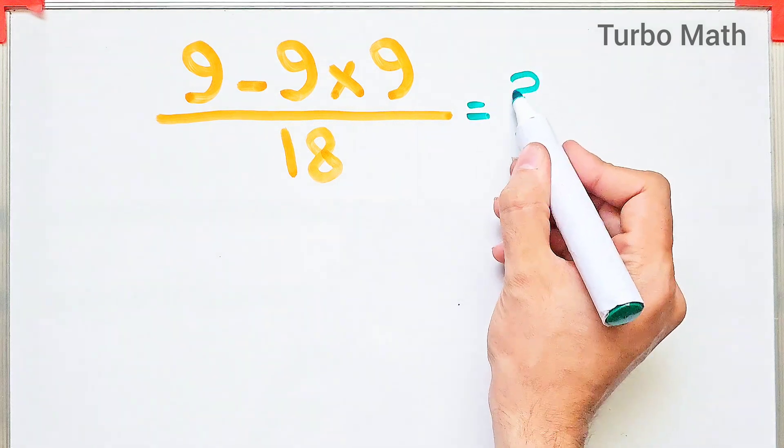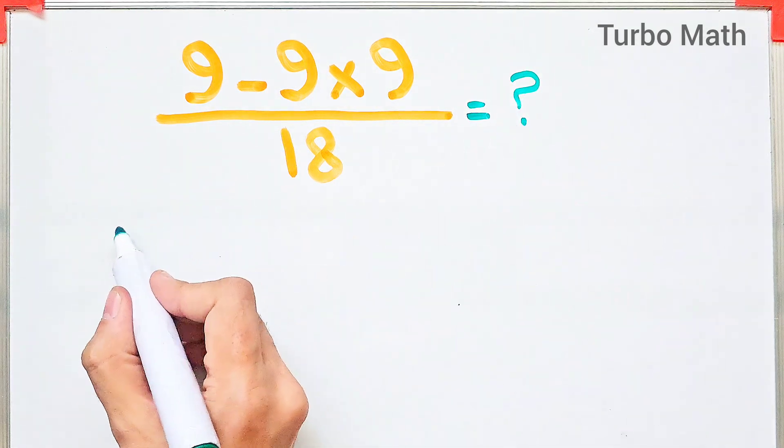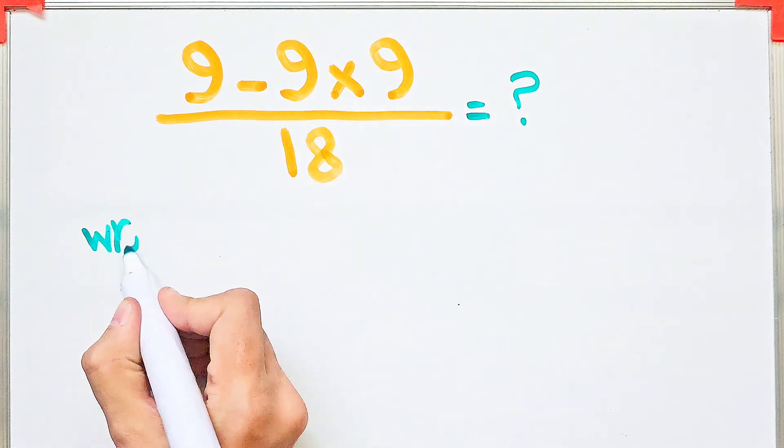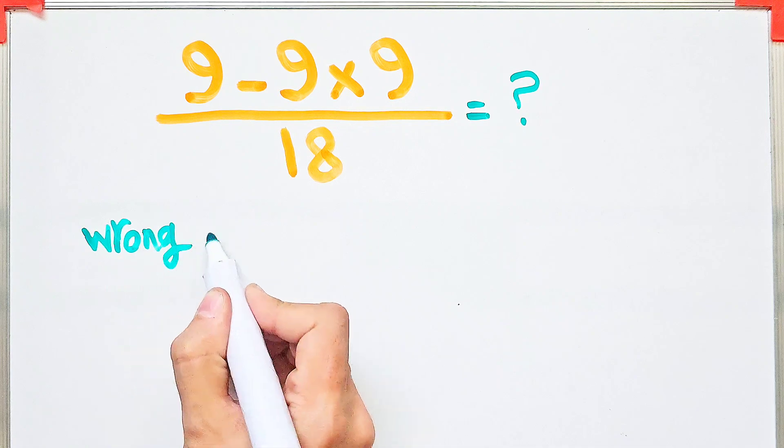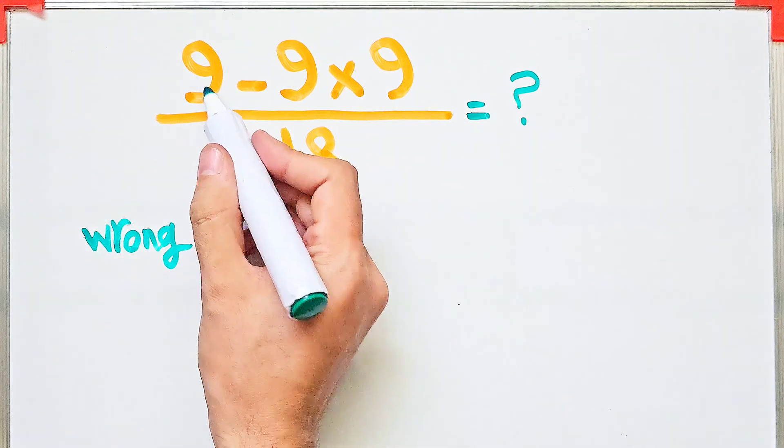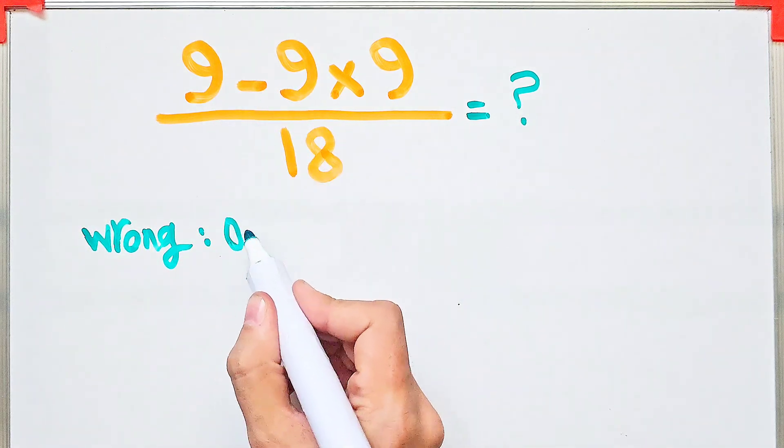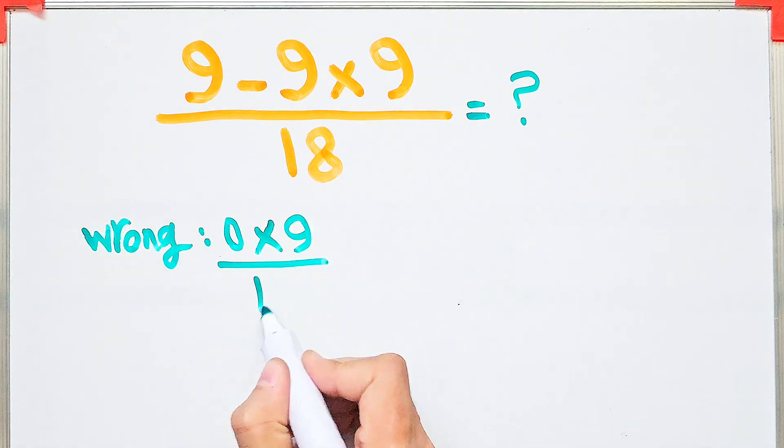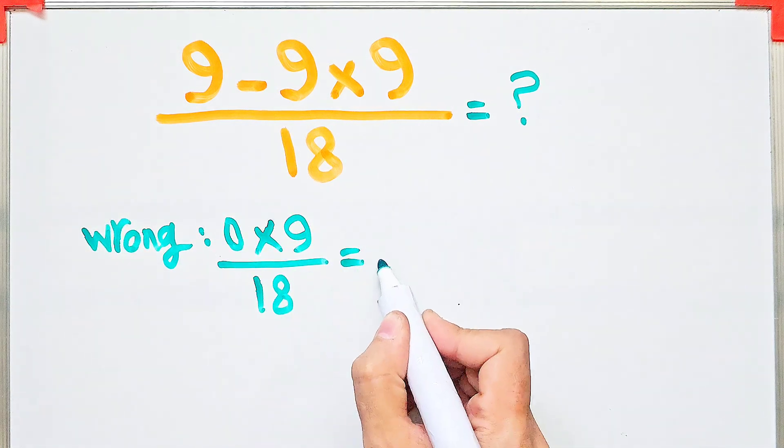9 minus 9 times 9 over 18. In the wrong way of solving this question, some people start from the left and simplify 9 minus 9 equals 0, and 0 times 9 then divided by 18 equals 0.